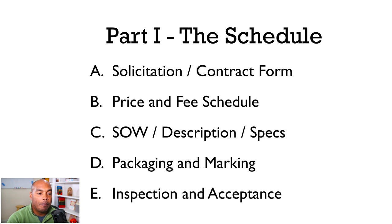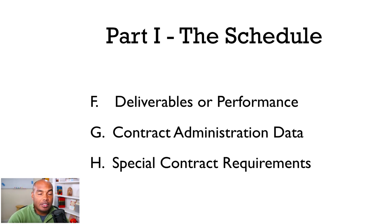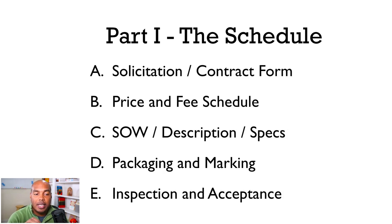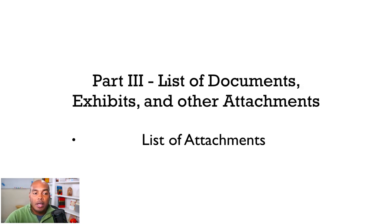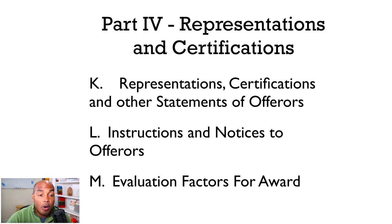The first part is called the Schedule, which has sections A through H. Section A is the actual solicitation, B is the price and fee schedule, C is the scope of work, D is packaging and marking, E is inspection and acceptance, F is deliverables of performance, G is contract administration data, and H is special contract requirements. Part two is your actual contract clauses — we'll go into each of these in great detail. Part three is your list of documents, attachments, and exhibits. Part four is representations and certifications, which covers instructions to offerors and evaluation factors for award.